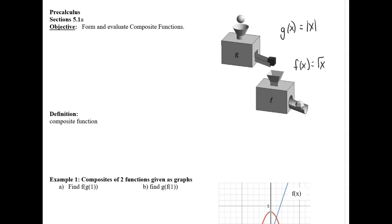But before we look at composites with equations, we're going to get an idea of the general meaning of composite functions with graphs, tables of numbers, and a definition. So if an input goes through one function g and you get an output g of x, that output becomes a new input going into the second function f, and we call that output f of g of x. That's the most common notation for composite functions.